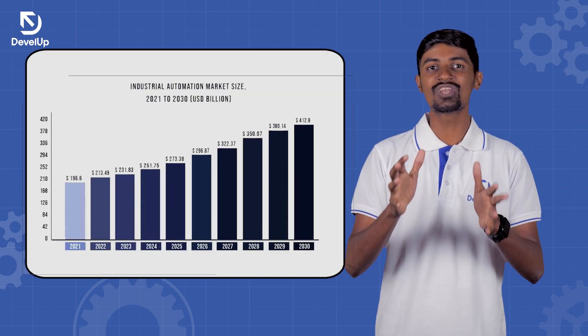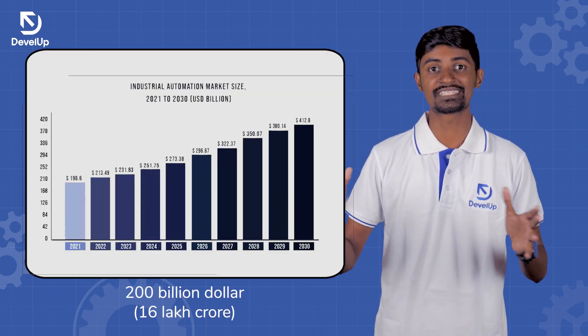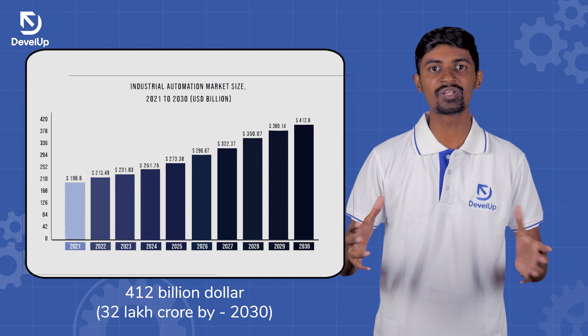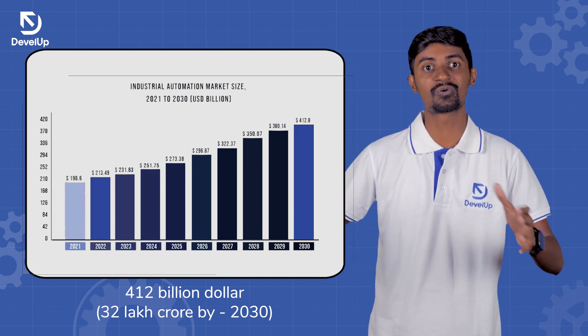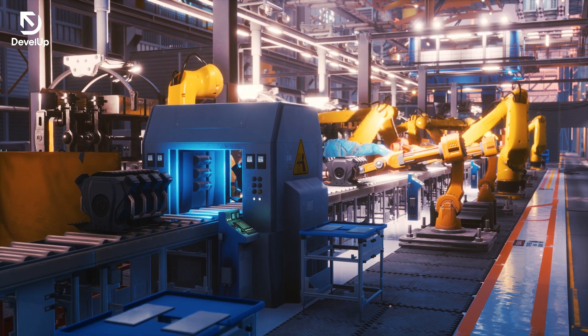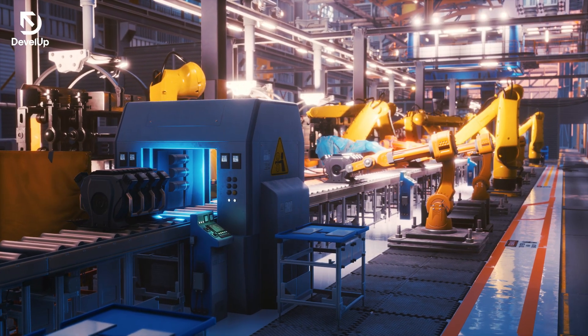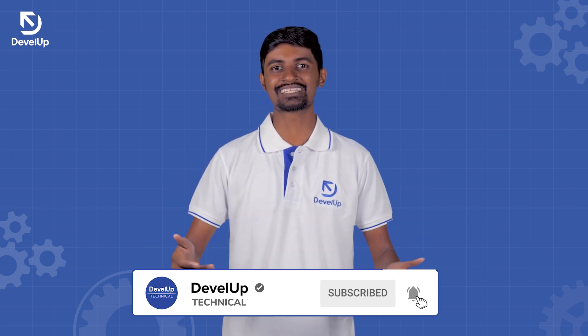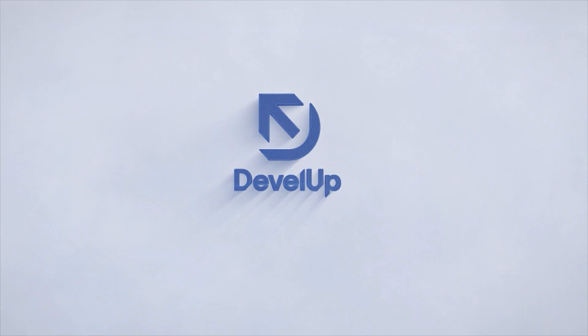Now, let's talk about the future. The Industrial Automation industry is currently a $200 billion industry. According to statistics, it is projected to grow to a $400 billion industry by 2030, making it the fastest growing industry. If you choose this subject and enter this sector, by 2030 you will be an experienced candidate. Subscribe and click on the bell icon for career and industry insights.